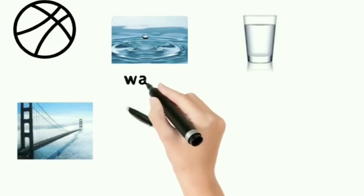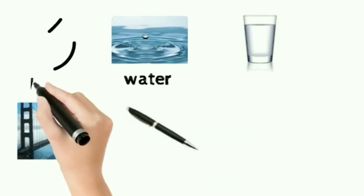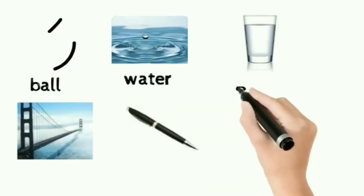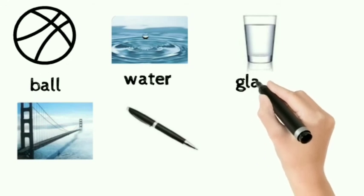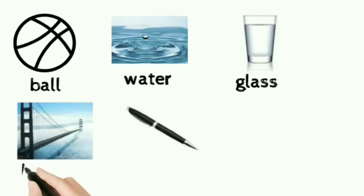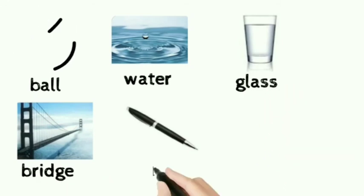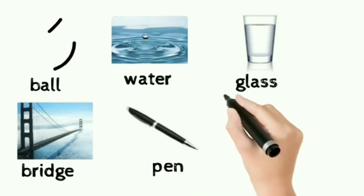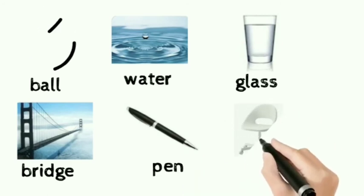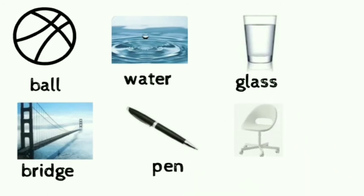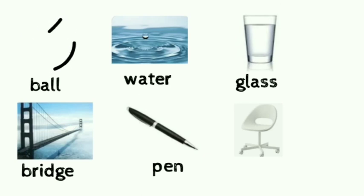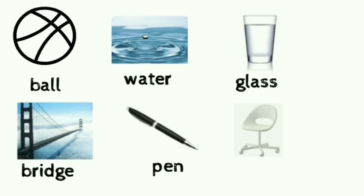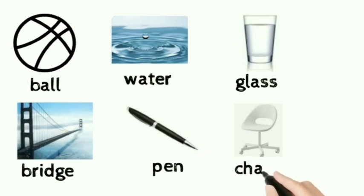More examples of concrete nouns include: pen, chair, clock, tower, park, star, lamp, computer, monuments, and many more.